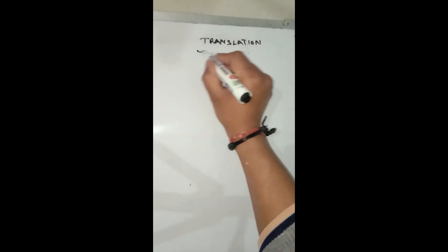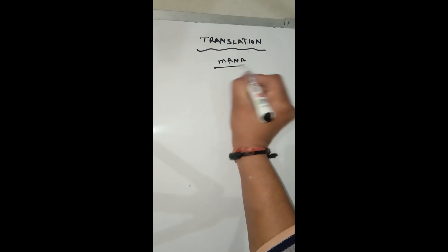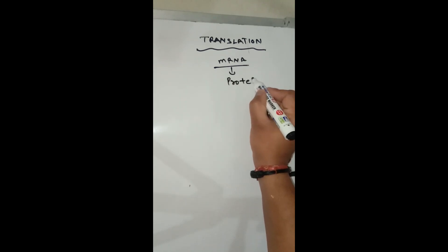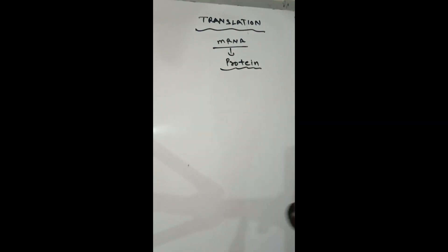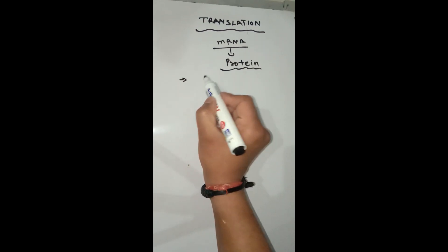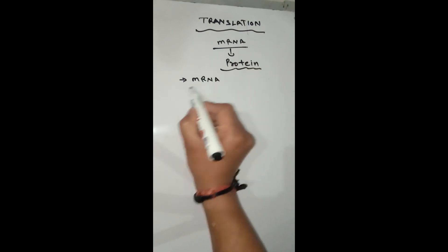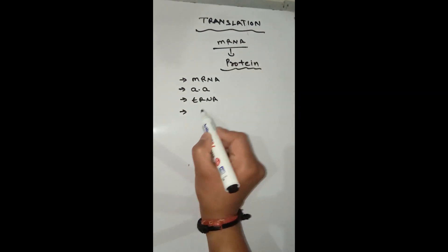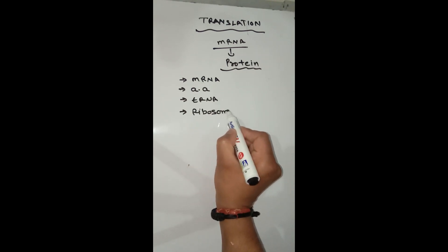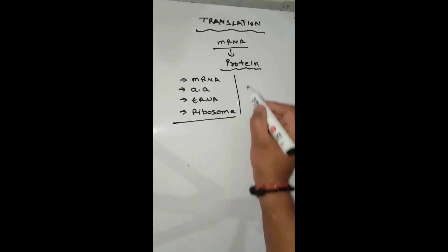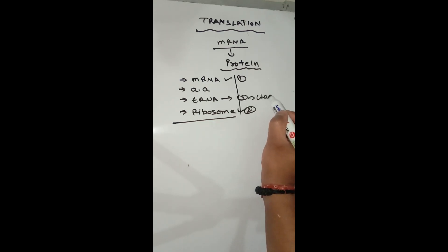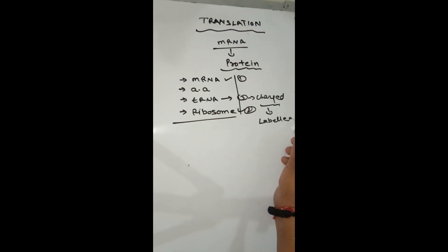Dear student, we will start with OPI, that is translation. Translation is the process by which mRNA carrying information from DNA is used for the synthesis of protein. For translation we need some machinery: first mRNA, then amino acids, then tRNA, then ribosome. In order of requirement: first mRNA, then ribosome, third we need tRNA which is charged — meaning it is labeled with amino acid.